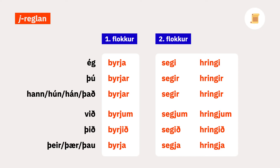One other difference between class 1 and class 2 verbs concerns the letter J (jóð). Many Icelandic verbs from all classes end in '-ja', like dyrja or séja. In class 1 verbs, the jóð is maintained in all forms, as you can see here.